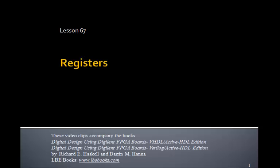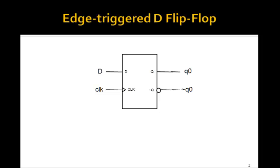This is Lesson 67 on registers. Here's the block diagram for the edge-triggered D flip-flop that we talked about in the last few lessons. Remember that D and clock are the inputs, and Q0 and not Q0 are the outputs. On the rising edge of the clock, D goes to Q. That is, Q0 gets whatever D is on the rising edge of the clock.